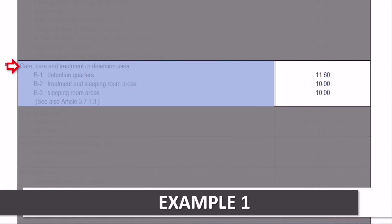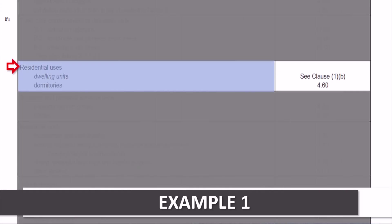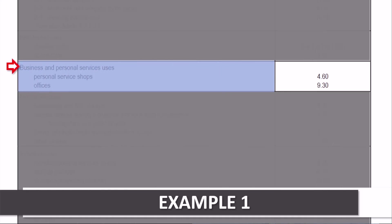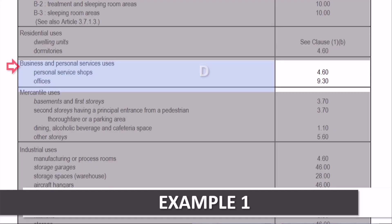Then, care, care and treatment, or detention occupancies are here. Remember, these are the ones identified as B1, B2, and B3. Followed by residential, which are the C occupancies. And business and personal services, which are the D occupancies.